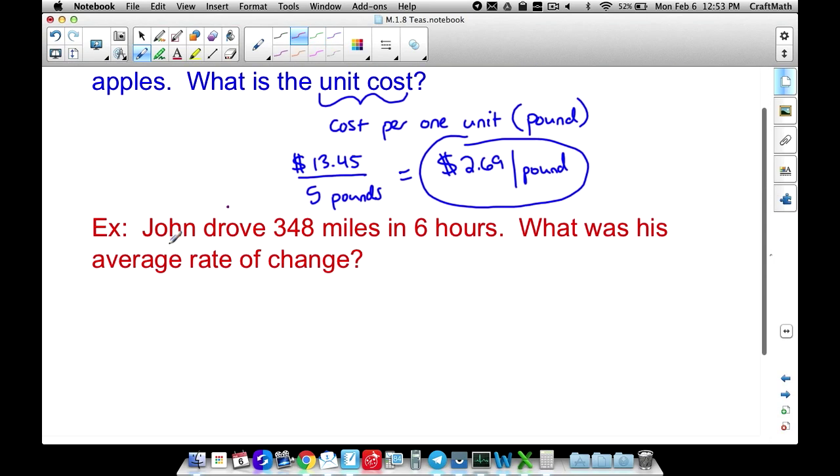What about this next example here? John drove 348 miles in six hours. What was his average rate of change? Basically in this problem, the rate of change, what's the average rate of change? We can say, hey, what was his average speed? Well, we take the distance, 348 miles. I'm going to write it as a rate divided by six hours.